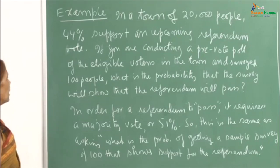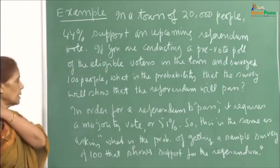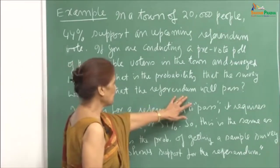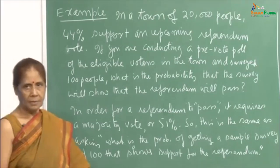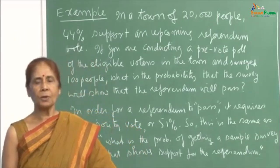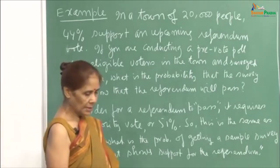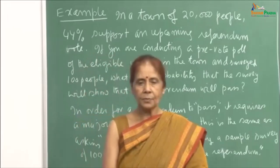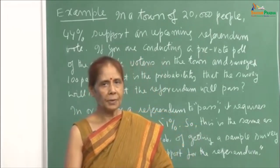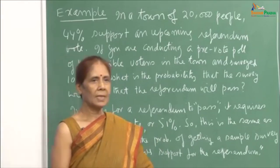For a referendum to pass, it requires a majority vote of 51 percent. Even though the feeling is that 44 percent support it, at the time of voting more people may vote for the referendum. So when you conduct a pre-vote poll of 100 people, if 51 percent or more support the referendum in that sample, you can say the pre-vote poll suggests the referendum will pass. But in the actual vote, if more than 51 percent of those who voted support the referendum, it will pass.